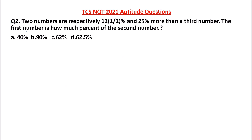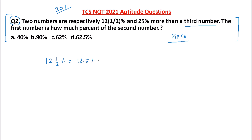Now question number 2 is very simple and many of you would have already attempted this kind of question. Two numbers are respectively 12 and a half percent and 25% more than a third number. The first number is how much percent of the second number? Friends, if instead of 12.5% you had 20% or 10%, this problem would be a piece of cake. But when the number is in fraction, that's where the problem comes. In the basic percentage classes, I mentioned 12.5% is nothing but 1 by 8.